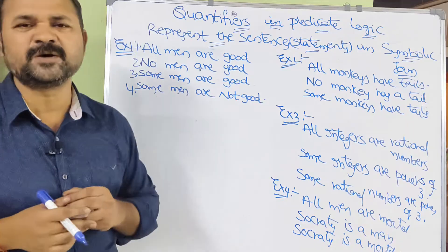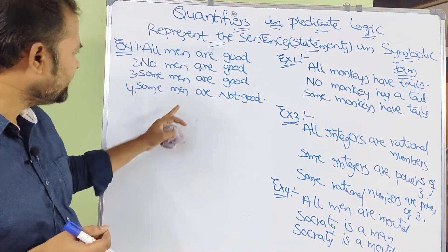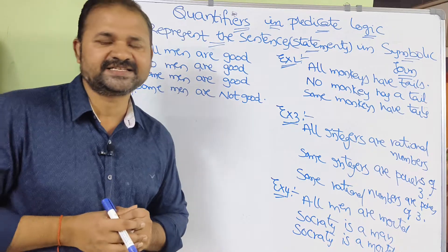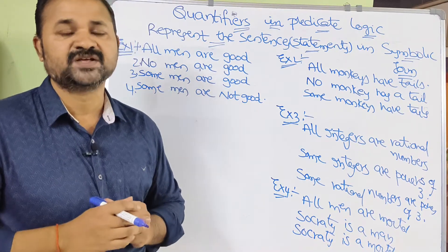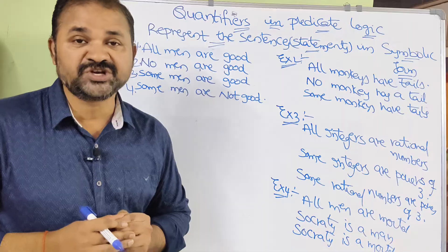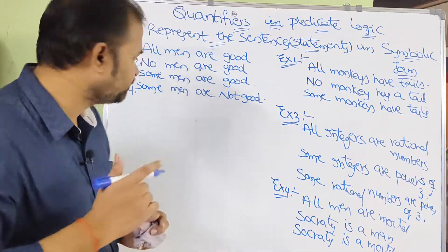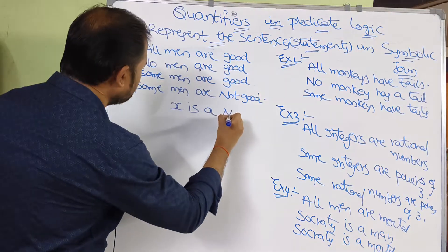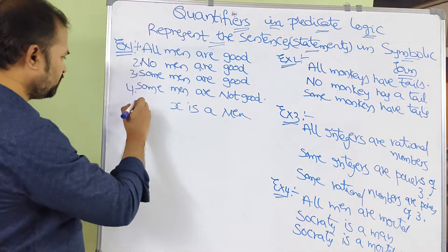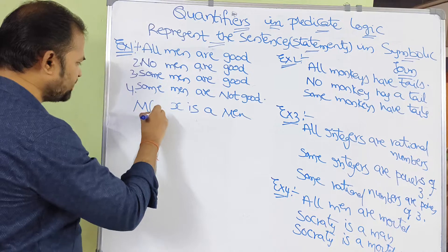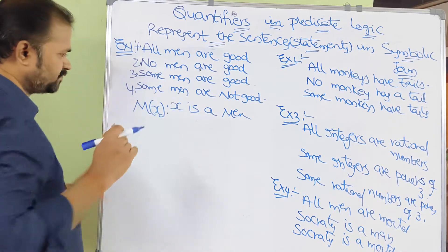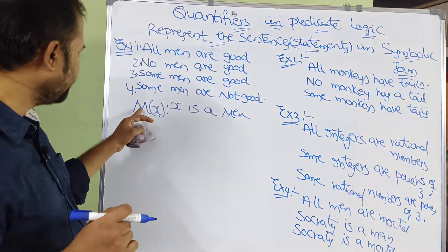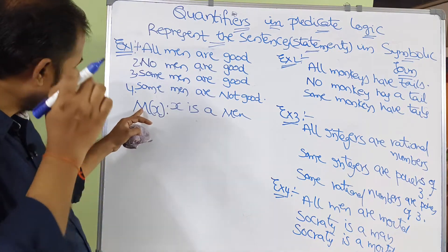We need to represent each predicate with a proposition or statement function. For 'X is a man', since men starts with M, the proposition function is M(x). Here X is nothing but the variable, or we can call it the subject.